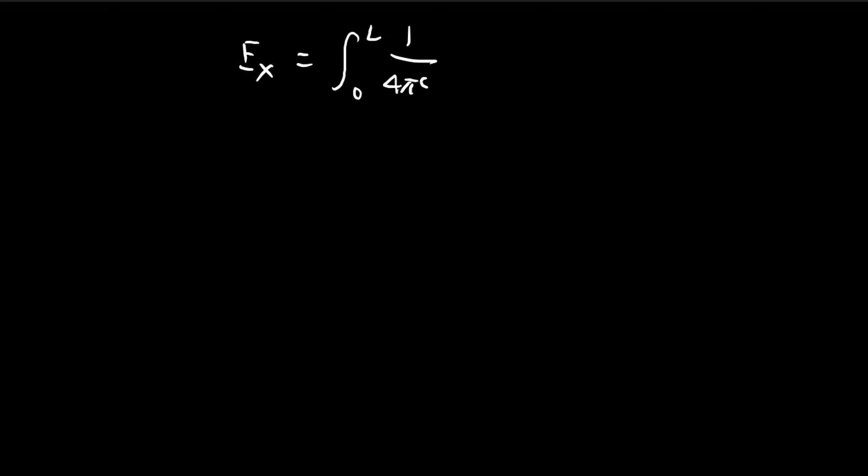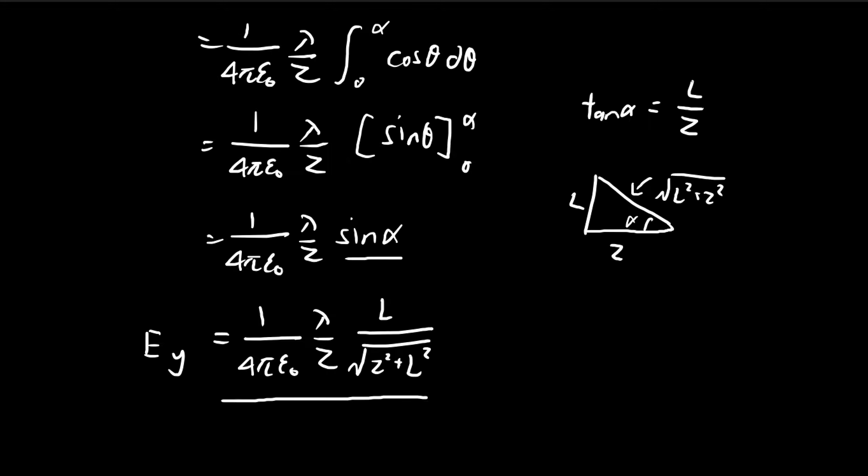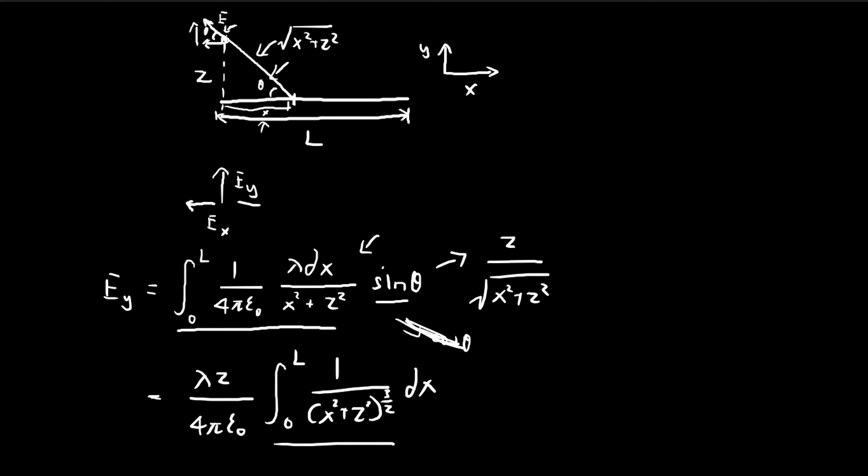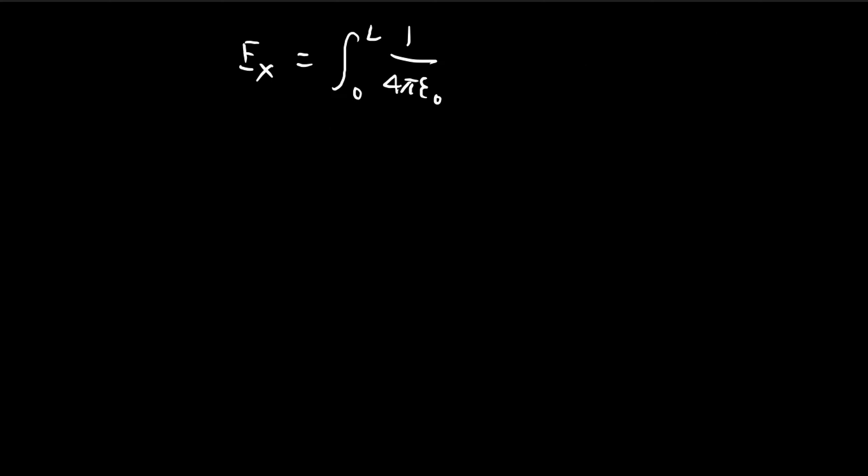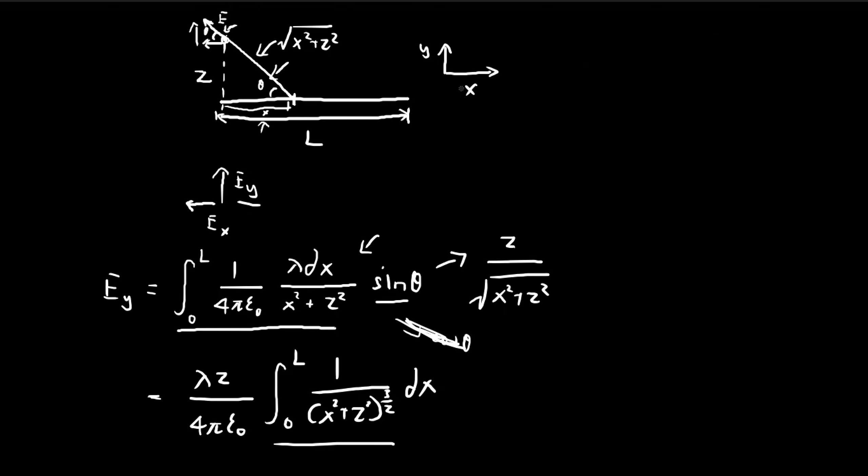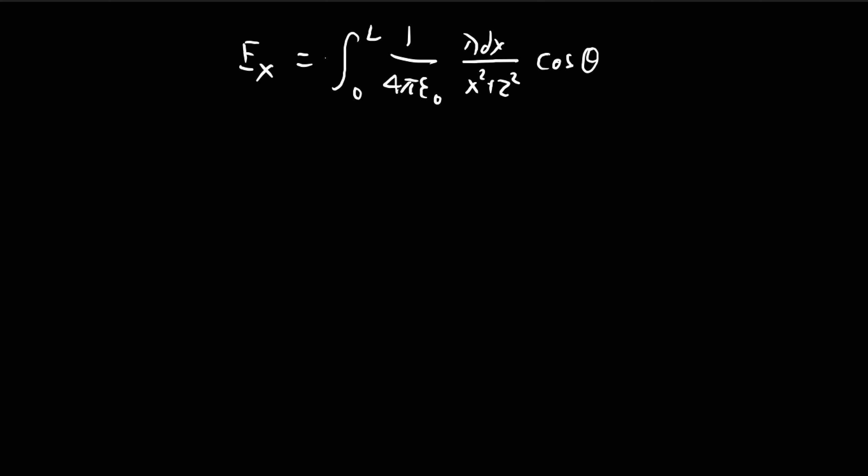So the integral that we had was lambda dx over 4 pi epsilon_0 times x-squared plus z-squared. So now we're going to go for the horizontal direction, cosine of theta. And don't forget, because since we're taking the rightwards direction as positive, and in this case it obviously points to the negative, like to the left, so we're going to have to add a negative here.